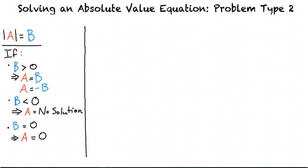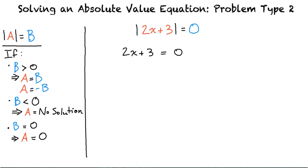Let's now take a look at the absolute value of 2x plus 3 equals 0. We set 2x plus 3 equals 0 and then solve for x. We subtract 3 from both sides and divide both sides by 2 to find a result of x equals negative 3 halves. This is the only solution, because we won't be able to make 0 positive or negative to get two solutions. Therefore, when an absolute value equation is equal to 0, it has only one solution to the variable.